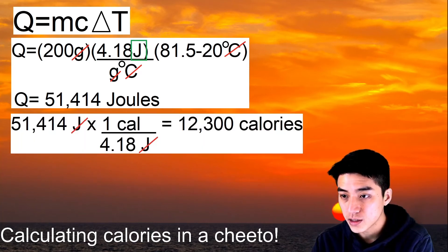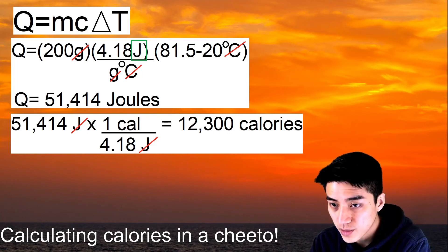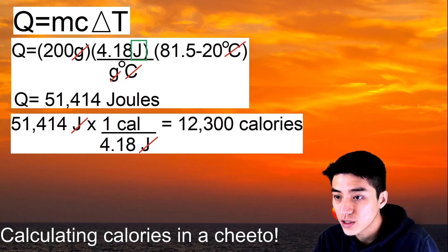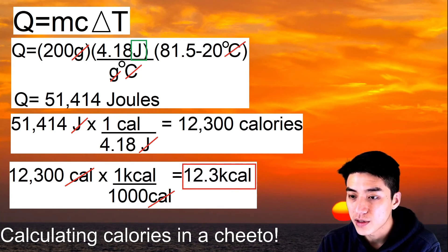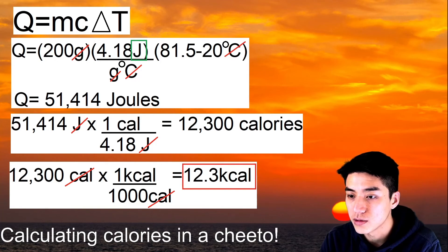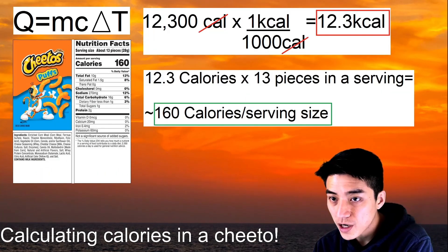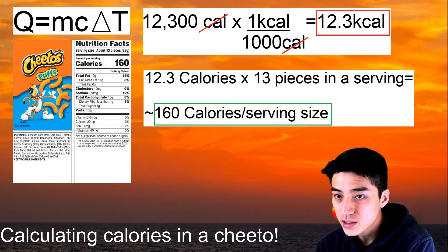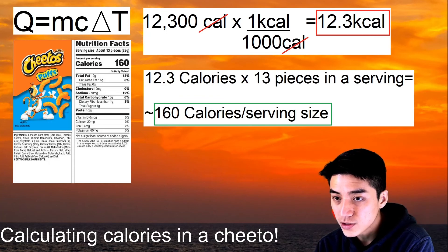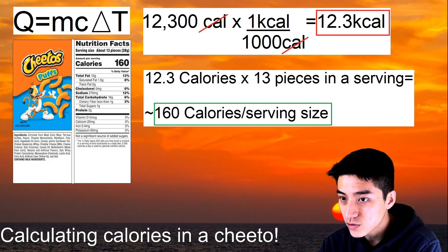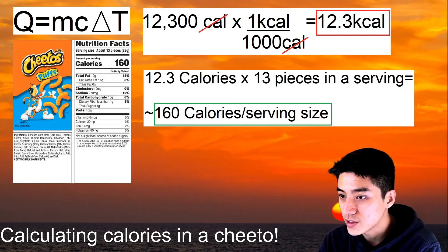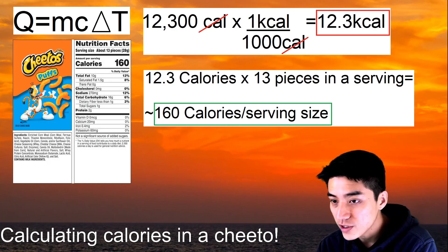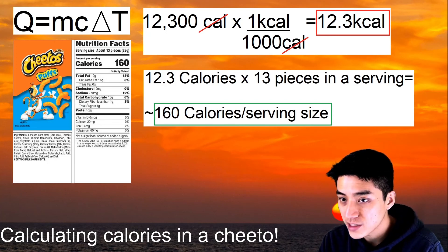I need to convert joules to little-c calories by dividing by 4.18, giving 12,300 little-c calories. Dividing by 1,000 converts to kilocalories, so I get 12.3 kilocalories — the same as 12.3 nutritional calories in one single Cheeto. Looking at the nutritional facts for Cheeto Puffs, a serving size has about 13 pieces with 160 calories per serving. Taking 12.3 nutritional calories per Cheeto and multiplying by 13, I get roughly 160 calories per serving, which matches the nutritional facts.